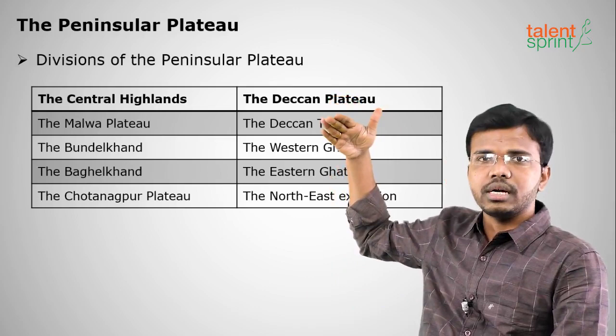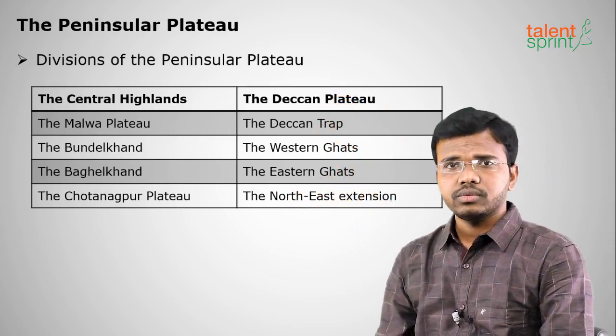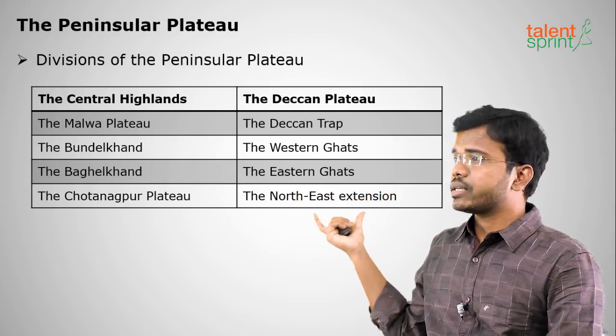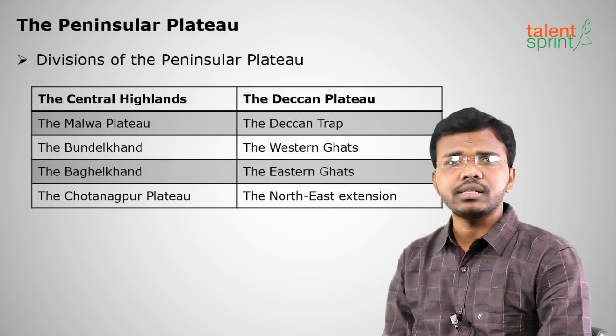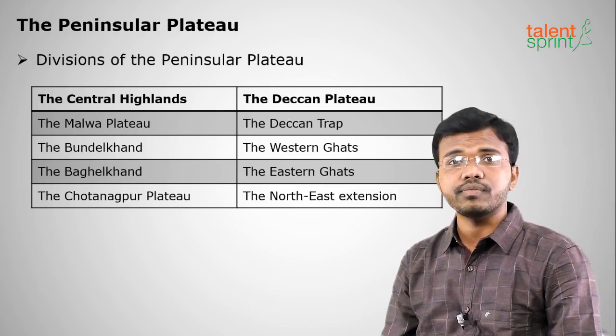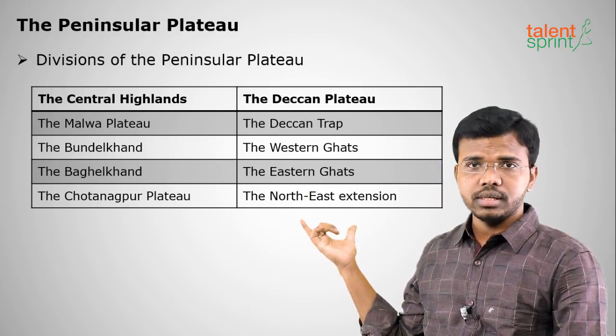The Central Highlands form the northern part of the Peninsular Plateau and include the Bundelkhand Plateau, Baghelkhand Plateau, Chotanagpur Plateau, and Malwa Plateau. The Deccan Plateau forms the southern part and includes the Deccan Trap, Western Ghats, Eastern Ghats, and northeastern extensions. The Deccan Plateau was formed by lava eruptions from volcanic activity.